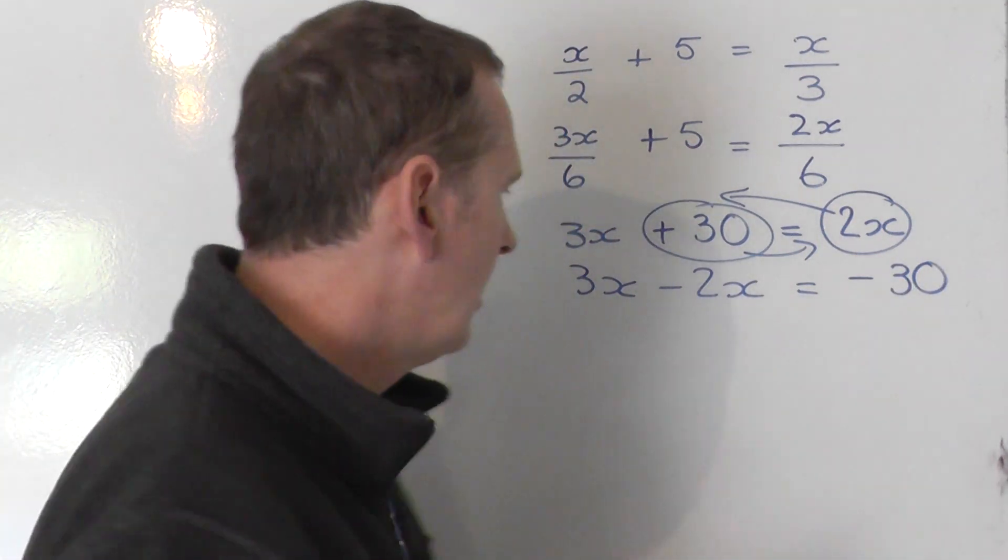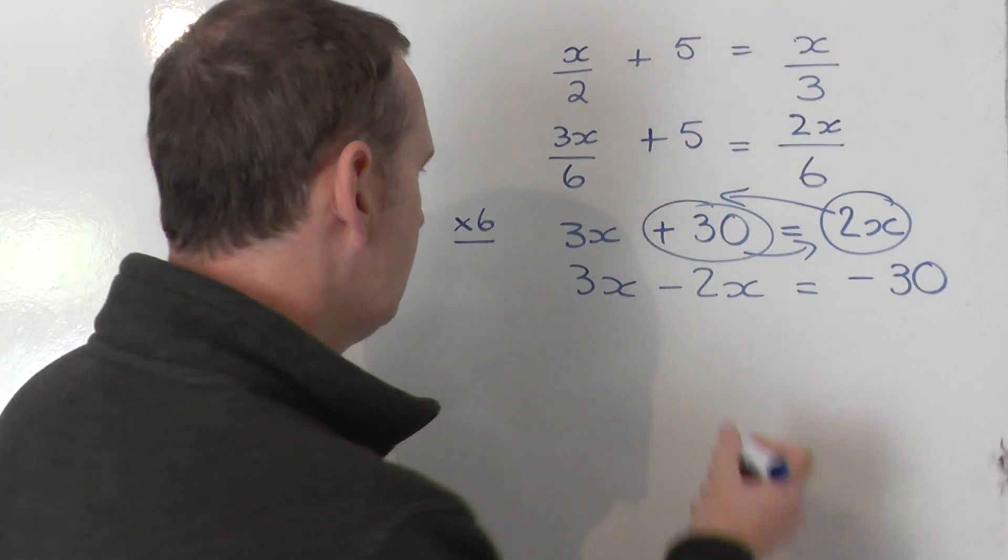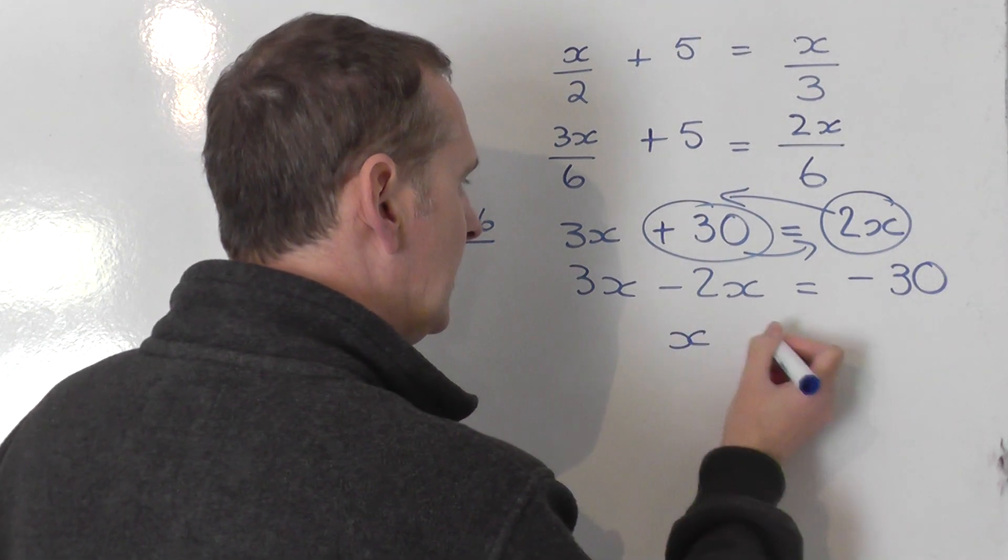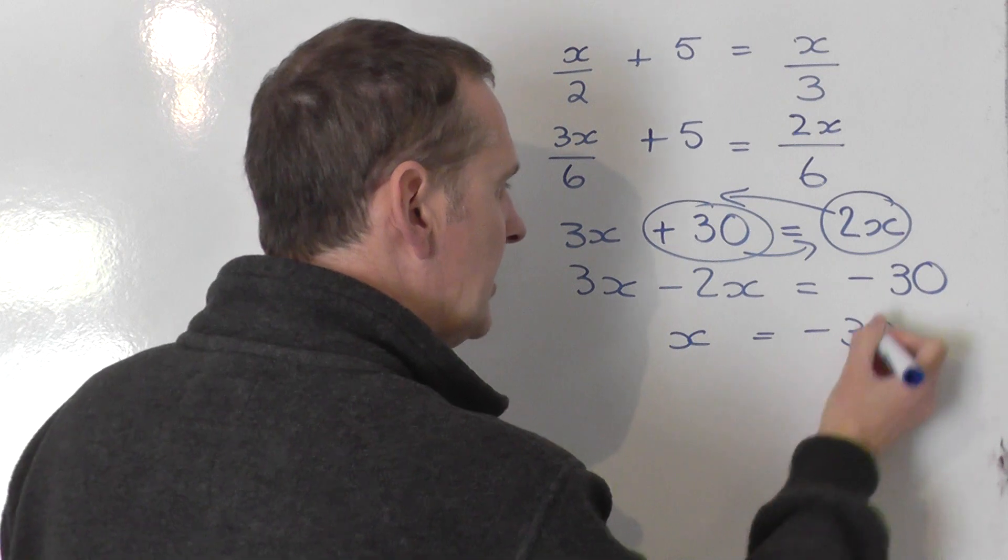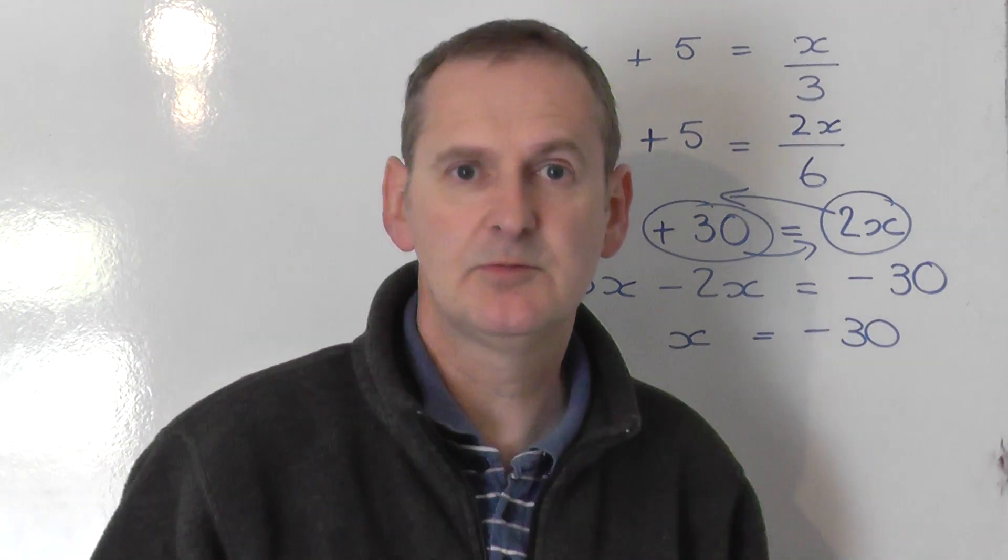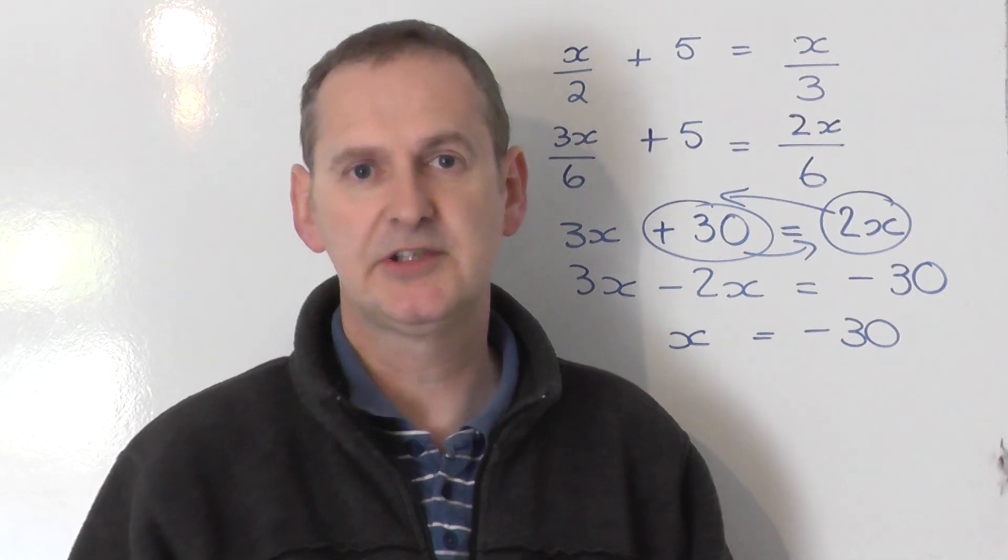And now we tidy up. On the left-hand side, 3x's take 2x's. That's a single x. And on the right-hand side, negative 30. And that is the answer. So, x equals minus 30 is the solution to this equation.